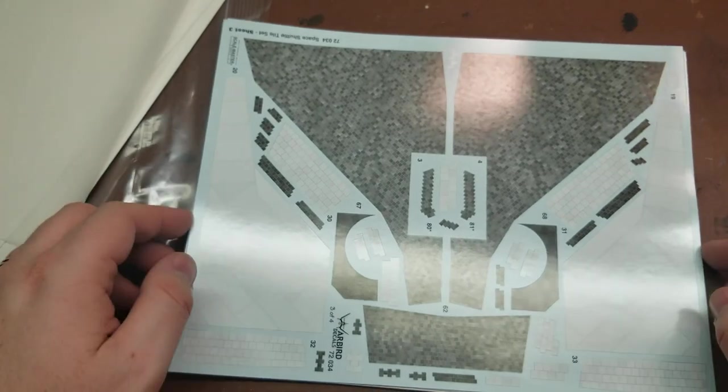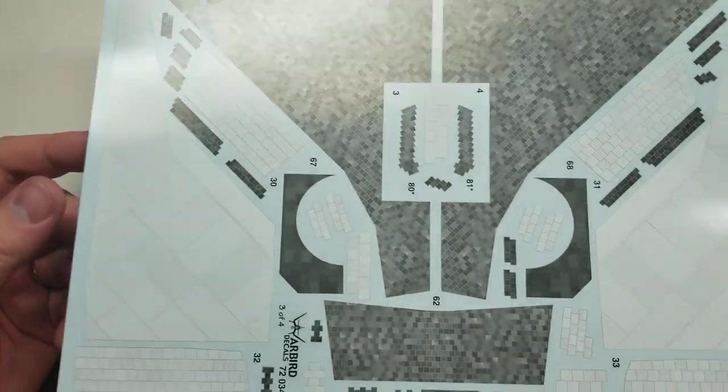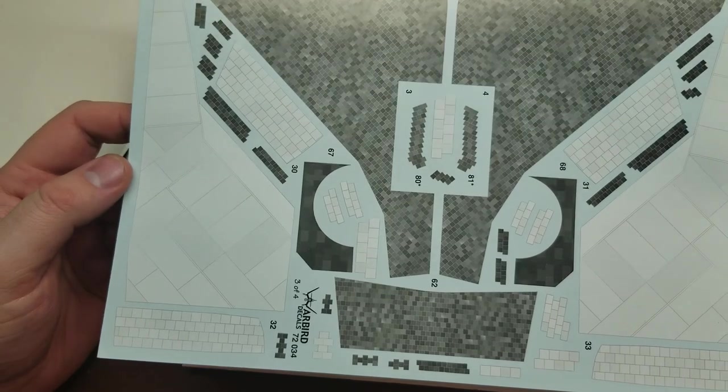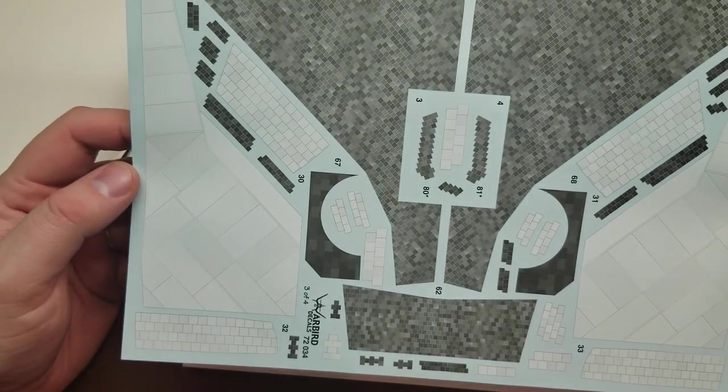Then going to sheet three which has the wings, so top and bottom.